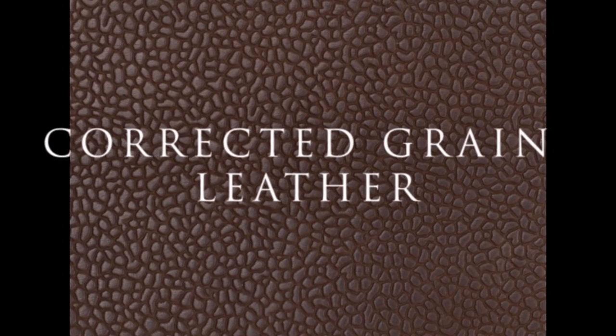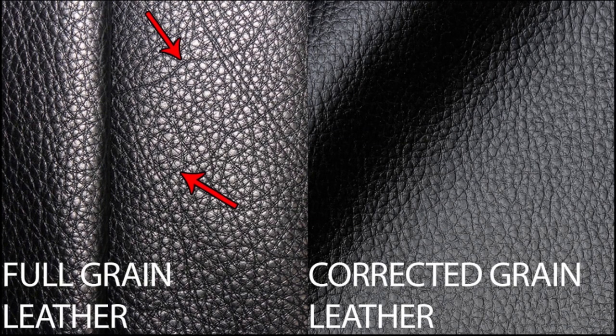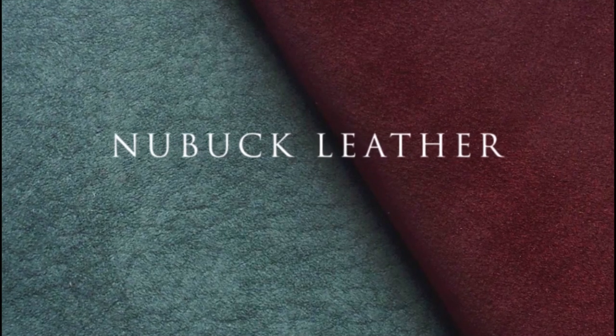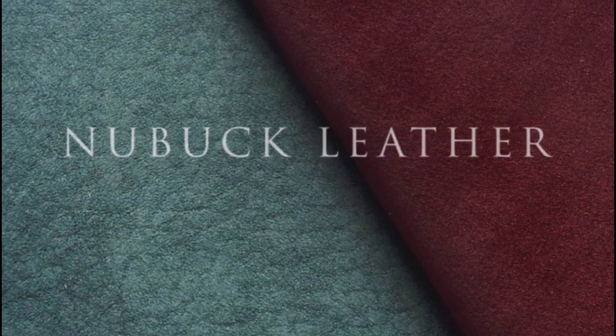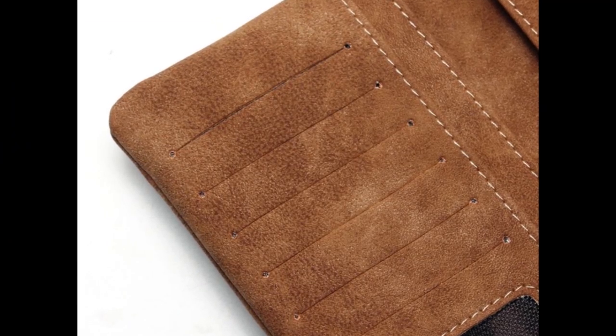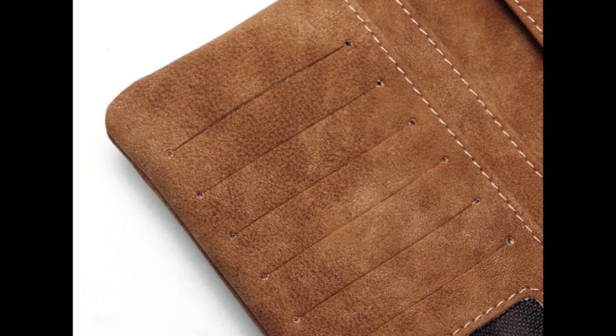Corrected grain leather has the surface subjected to finishing treatments to create a more uniform appearance. This usually involves buffing or sanding away flaws in the grain, then dyeing and embossing the surface. Nubuck leather is a top grain leather that has been sanded or buffed on the grain side to give a slight nap of short protein fibers, producing a velvet-like surface.